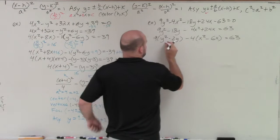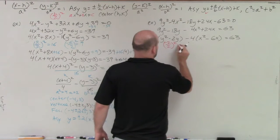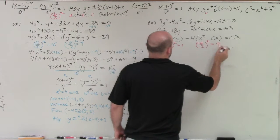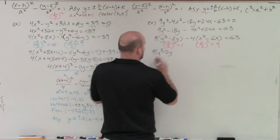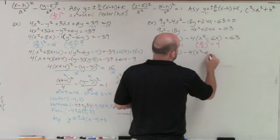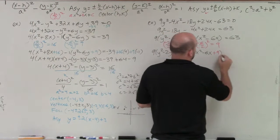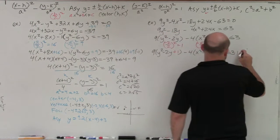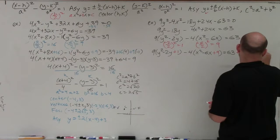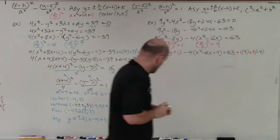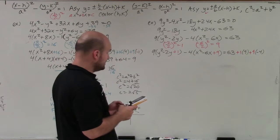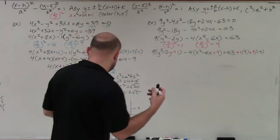Now I can complete the square: (−2/2)² = 1 and (−6/2)² = 9. So I have 9(y² − 2y + 1) − 4(x² − 6x + 9) = 63. I need to add 1 times 9 and 9 times negative 4 to the right side. So 63 + 9 − 36 = 36.